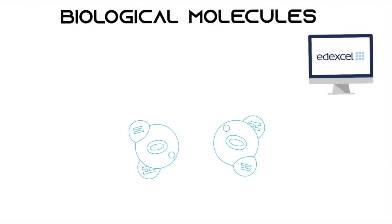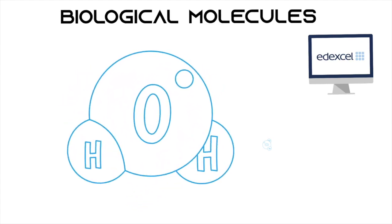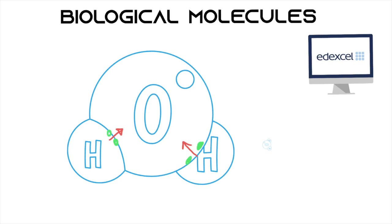I'll first start with the properties of the water molecule. The water molecule is really special because the electrons within this molecule are not really shared equally. There's a pair of electrons here, and another pair of electrons here. These electrons are pulled by the oxygen atom more than they are pulled by the hydrogen atoms, because oxygen is a bigger atom, so it's pulling those electrons towards its side. Electrons being negative means that the oxygen is going to be slightly negative.